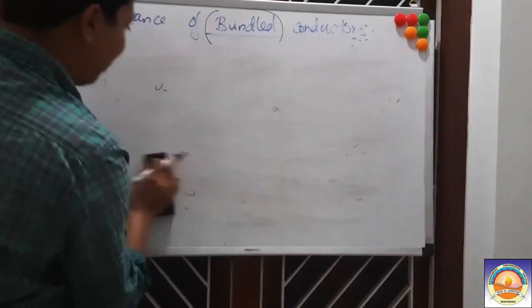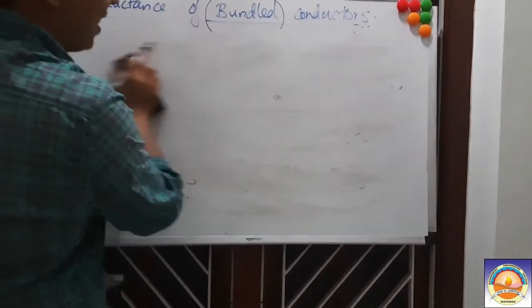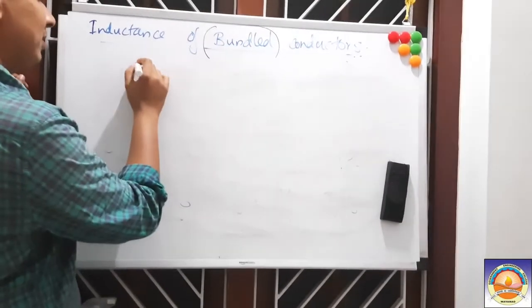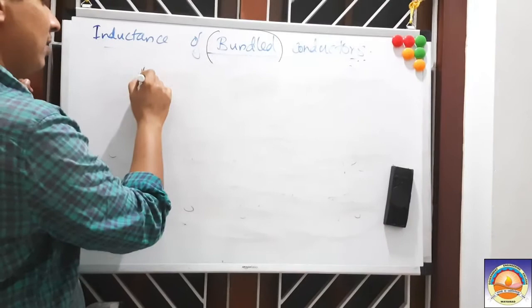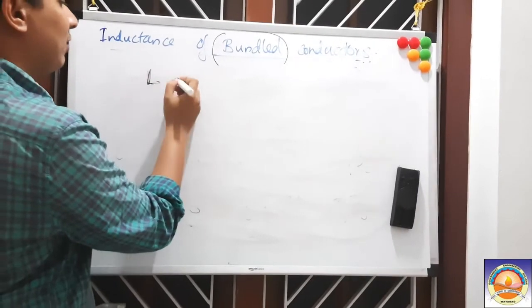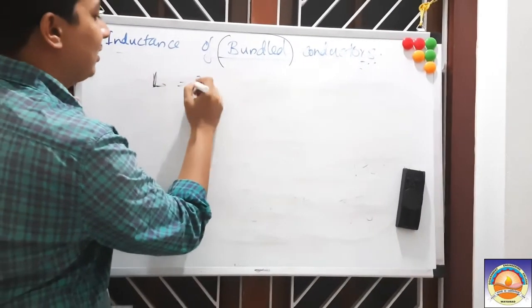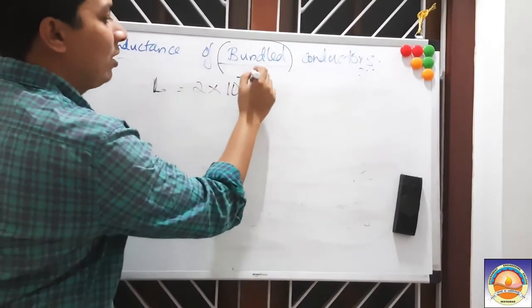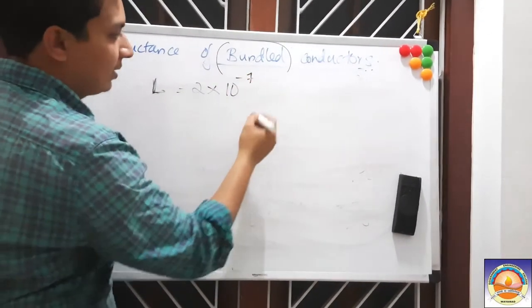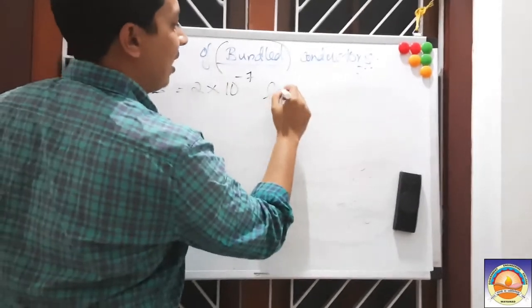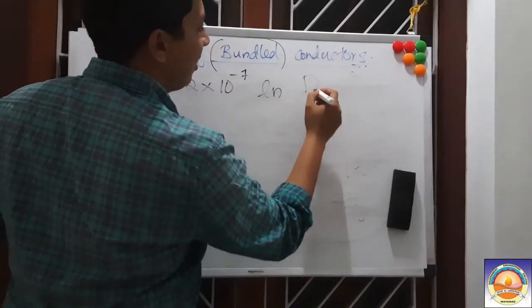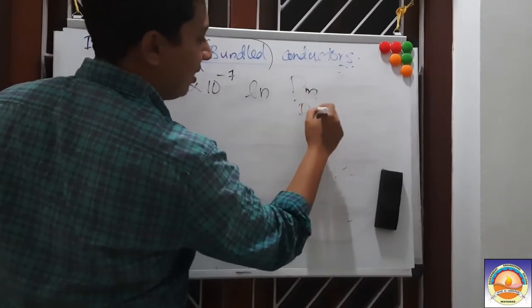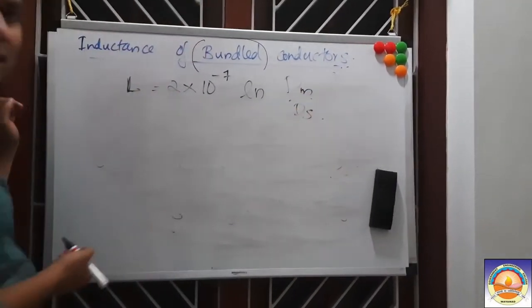The inductance equation always has the form: L = 2×10⁻⁷ × ln(GMD/GMR), where GMD is the geometric mean distance and GMR is the self-geometric mean distance. In the next lecture, we will discuss the derivation for bundle conductors in more detail.